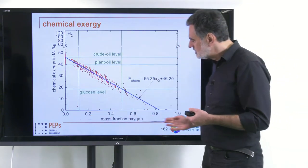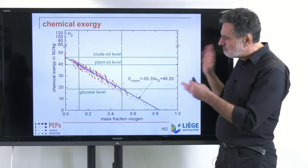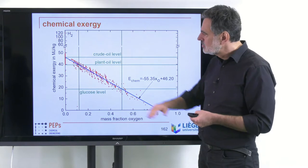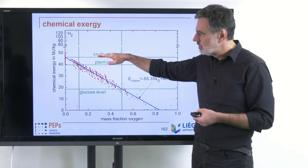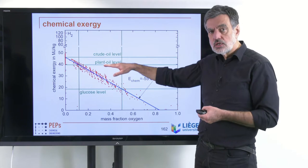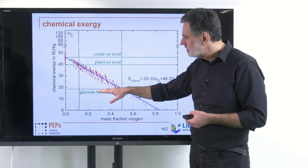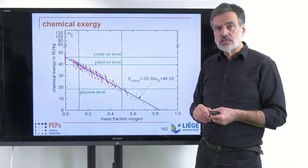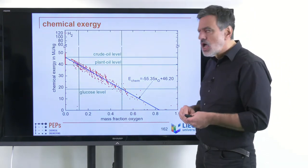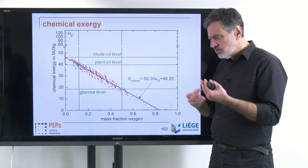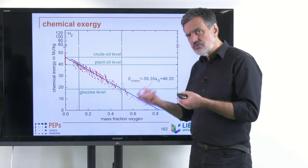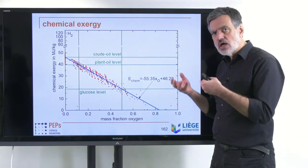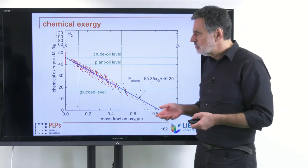The three oxygen levels he distinguished were: the crude oil level containing no oxygen, the plant oil level containing only a little oxygen, and the glucose level containing significantly more oxygen. The idea is to investigate how a general process shifting components from one level to another uses exergy, in order to estimate which routes are possible for bioeconomy in the future.